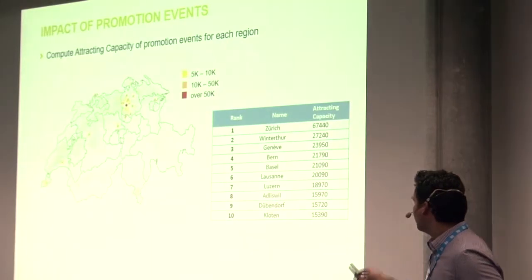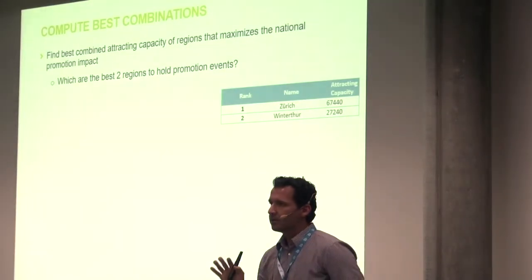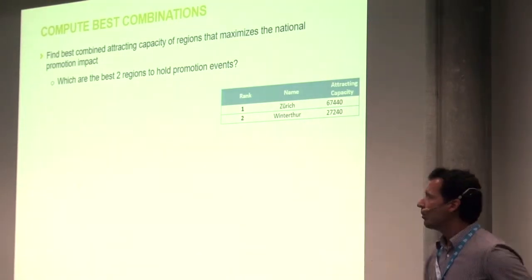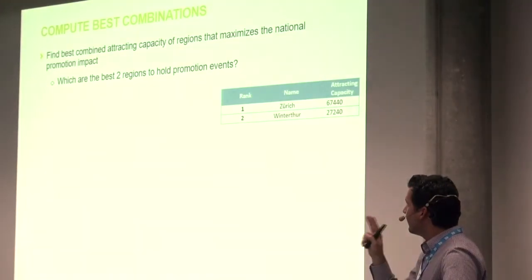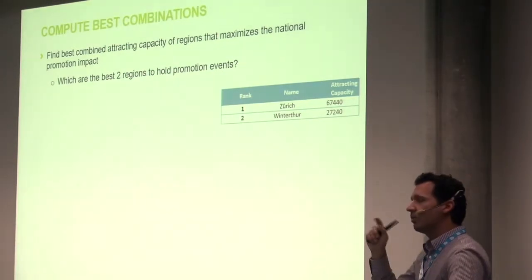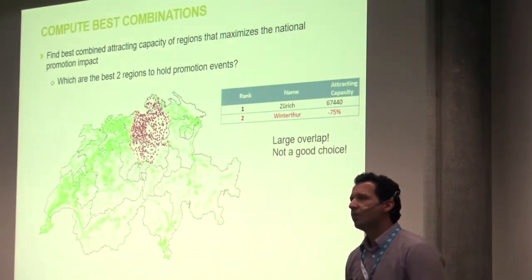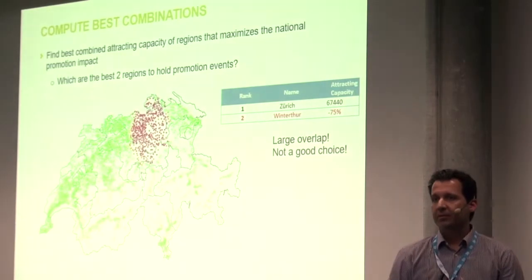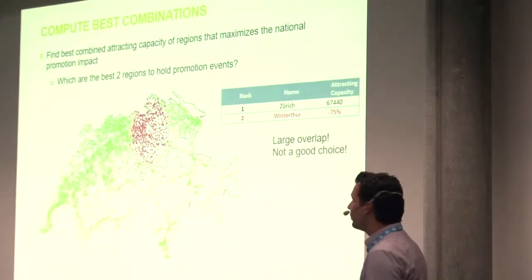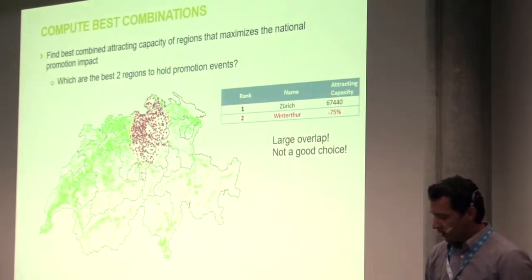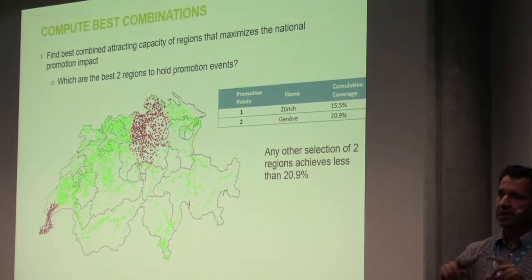You can also have Geneva, Bern, and so on. But when talking about promotion campaigns comprising multiple events, choosing simply by attracting capacity — say Zurich and Winterthur — is not correct, because these two have a very large overlap in the people they attract. You'd be delivering the same message to the same people twice. Instead, we want to maximize overall national coverage across a series of promotion events. So after choosing Zurich, an algorithm updates all attracting capacities given that a promotion event has already been held in Zurich, and then selects the second biggest — Geneva — then Bern for three events. With 15 cities, the iterative algorithm shows coverage can reach up to 45%.